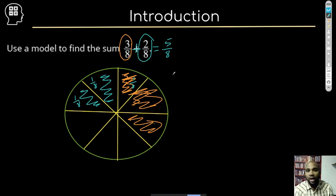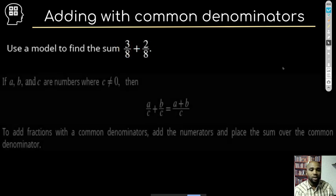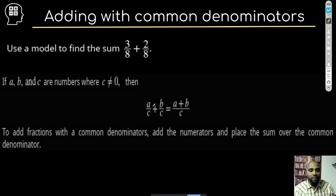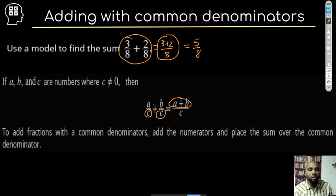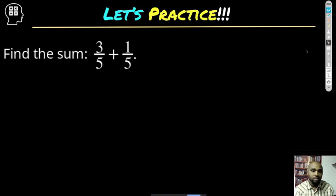Do you notice a pattern about how we can add fractions that have like denominators or common denominators? Anytime you have a/c + b/c — where C represents any number and those two denominators are the same — all you simply do is add your numerators. So we just said three plus two over eight. These two separate fractions can be represented by that one fraction. See that three plus two over eight is the same thing as five over eight — because it won't always be two numbers I can simply add together.